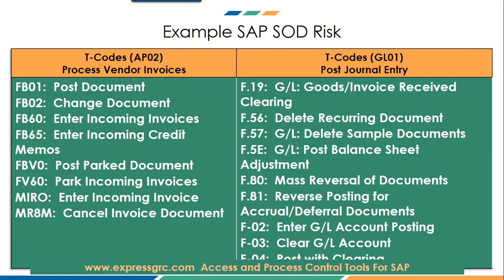SOD risk typically contains two or more combination of transactions. The GRC tool will basically look for users who have access to transaction FB01 or F19, FB01 or F-56, or any transaction on one side combined with any transaction on the other side. This is what is called segregation of duties risk.